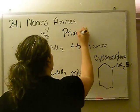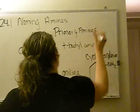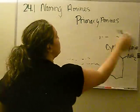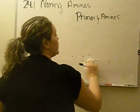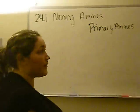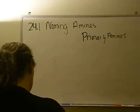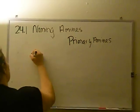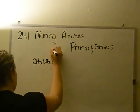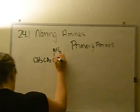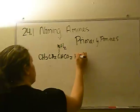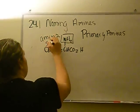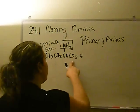That was for the primary amine. Now if we have a secondary amine, or a molecule with more than one functional group — so say you have a carboxylic acid — the amine becomes an amino substituent, and it loses priority to the carboxylic acid.